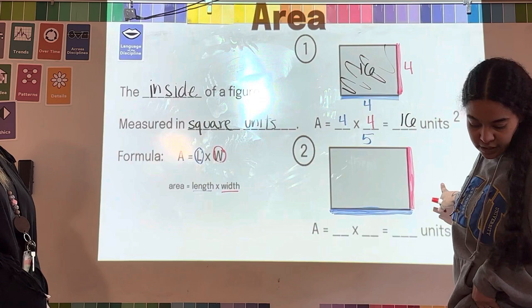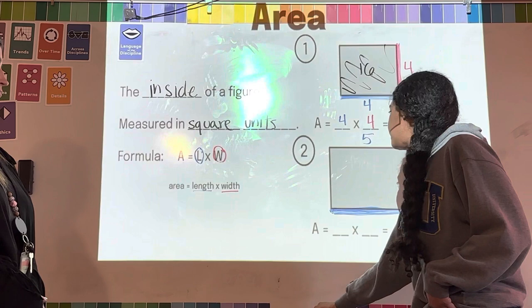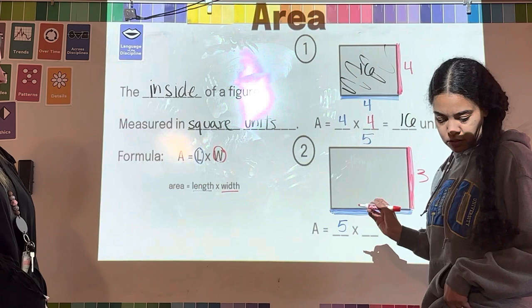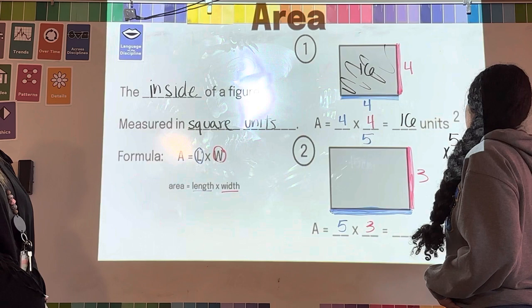All right, so again I'm going to take the numbers from the picture, plug them into my equation, and then we're going to start doing some multiplication. So five times three. Math fact, five times three, that's 15.